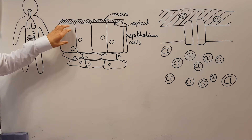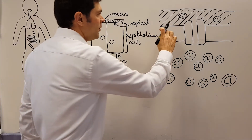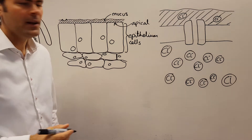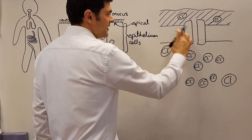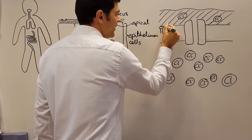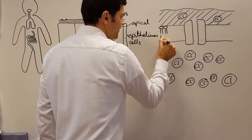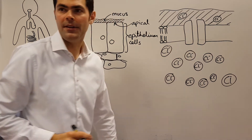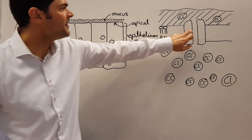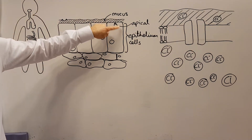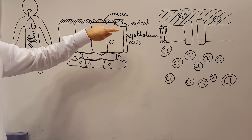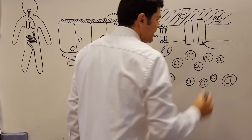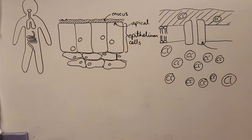In these epithelium cells, the apical membrane — shown in this zoomed-in diagram as a thick strip, which of course contains phospholipids — this is the membrane on the apical surface of the epithelium cells. Located in that membrane is a specific protein. Have a think about what the name of that protein is.